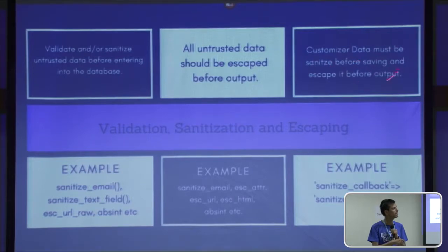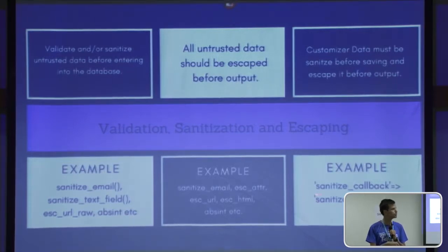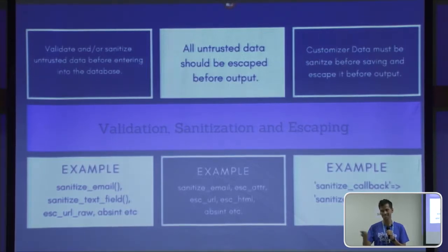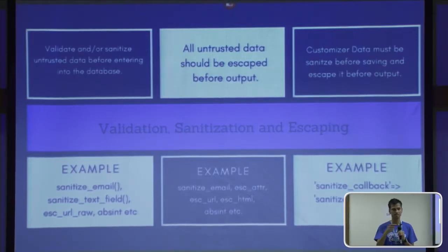Customizer data must be sanitized before saving and escaped before output. WordPress only supports the customizer API, not a settings API — theme options pages are not allowed. When developing settings in the customizer, you need to use the sanitize_callback parameter. For example: sanitize_text_field for text fields, esc_url_raw for URLs, and custom functions for integers or checkboxes. There are lots of sanitization, escaping, and validation functions available in WordPress, but if there is none available, you need to make your own function, otherwise your data will not save properly.